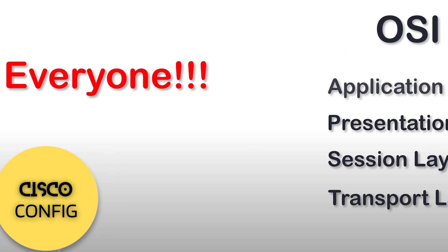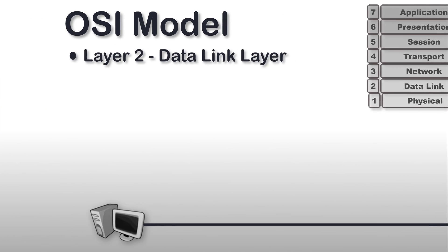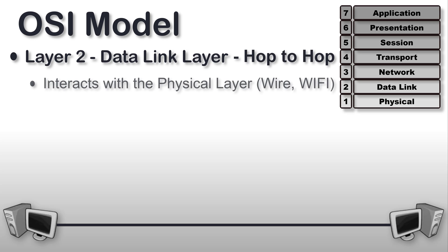Hey everyone, welcome back to the channel Cisco Config. In this video we are going to discuss the second layer of the OSI model, that is the data link layer. The data link layer is the second layer of the OSI model and its goal is hop-to-hop delivery. Layer 2 is going to interact with the physical layer, putting 1s and 0s on the wire and receiving 1s and 0s from the wire during transmission. Whatever connects to this wire on the PC side is considered a layer 2 item.